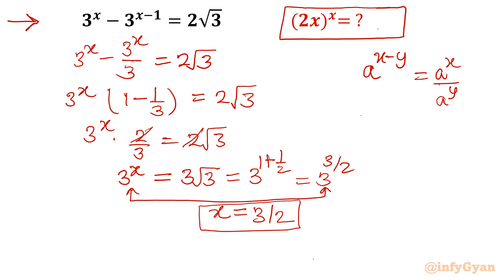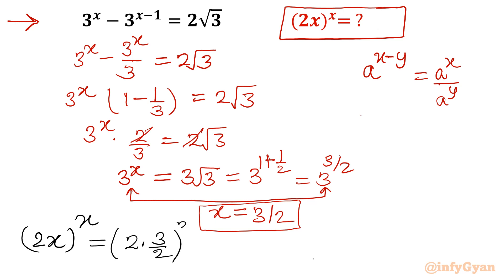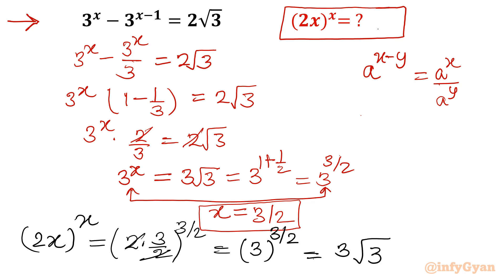Now we have to find (2x)^x. Substituting x = 3/2: (2 · 3/2)^(3/2) = 3^(3/2). The 2s cancel, leaving 3^(3/2) = 3√3. So the answer is 3√3. This is how we can simplify such kinds of questions.